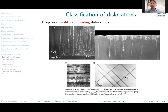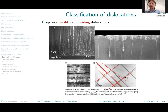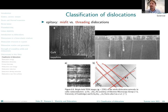The misfit dislocations would be lying at the interface, as shown in this picture which is a plan view. We are looking from the top towards the substrate, and we look at the network of dislocation lines at the interface between the thin film and the substrate. These dislocations would be presumably edge type dislocations. That means every now and then there is an extra half-plane in the thin film which relaxes the lattice mismatch. Those we call misfit dislocations — again, something very important for the terms we'll be using later on.